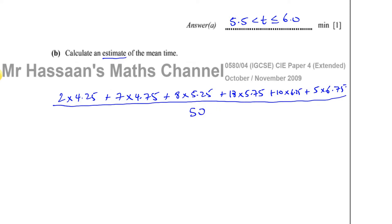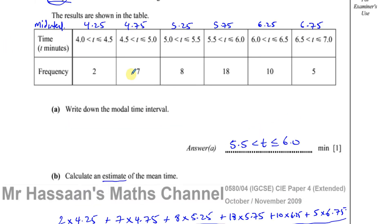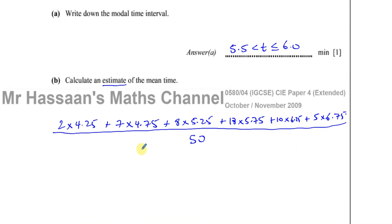Be careful here — a lot of people will say there are 1, 2, 3, 4, 5, 6 groups and divide by 6. No. There's not 6 entries. These are the number of entries: there are 2 in this group, 7 in this group, 8 in this group. So totally there are 50 entries — not just the number of columns. You have to divide by 50 to get the estimate of the mean.